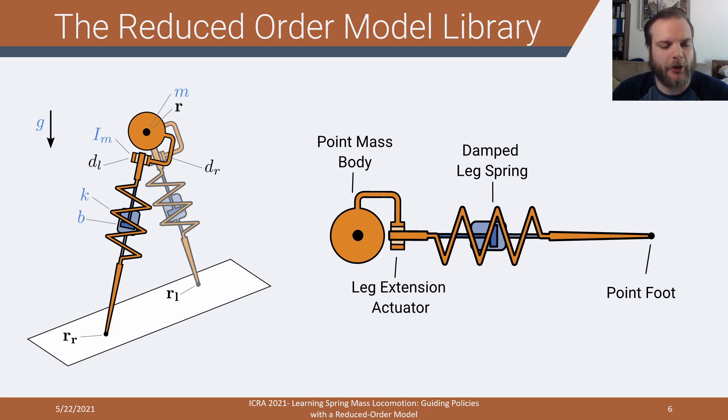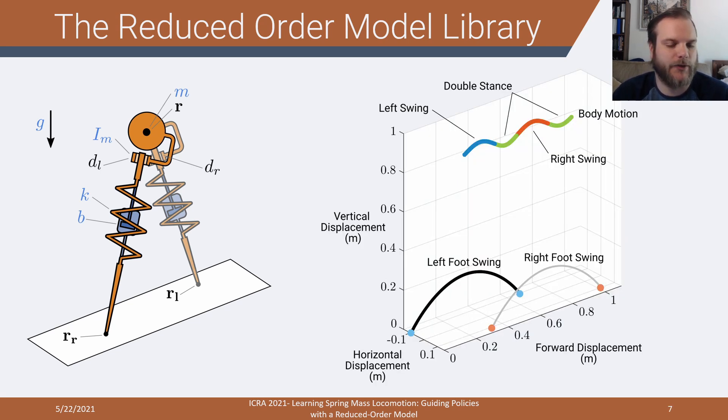We're going to take this model and run it through a direct collocation trajectory optimization. It will end up producing motions that look kind of like this. So this is a one meter per second gait. In this optimization, we applied constraints to make it physically realizable for our robot. That's things like the maximum and minimum leg lengths, the maximum force that can be applied through a leg. And to get the gaits we want, we can apply constraints so that the average velocity is the specific one we want for that gait and that they have to be periodic. Then we optimize with an objective, which is minimum torque squared, which is equivalent to minimizing the thermal losses in an electric motor.